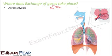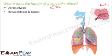The exchange of gases occurs across the alveoli, and it also occurs between the blood and the tissues. The blood vessels are closely located to the alveoli, so exchange occurs between the alveoli and the blood vessels. Blood then carries the gases to different parts of the body, and exchange occurs again between the blood and the tissues.